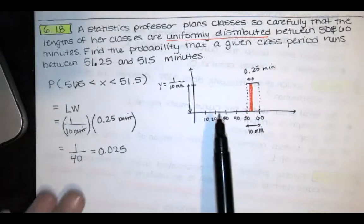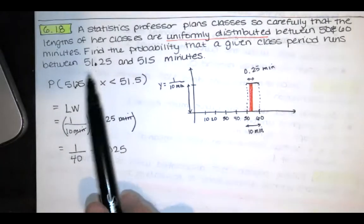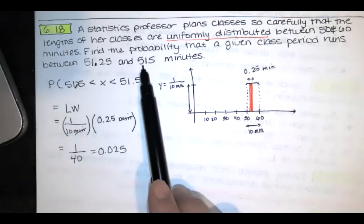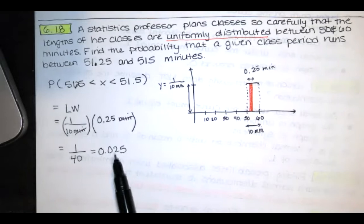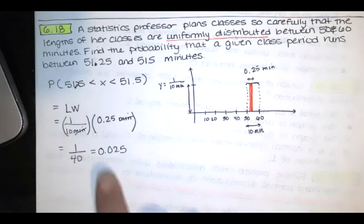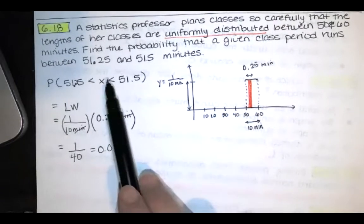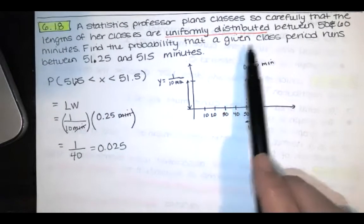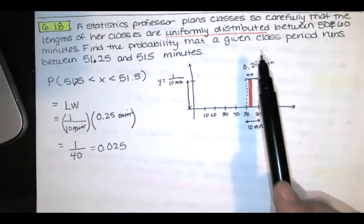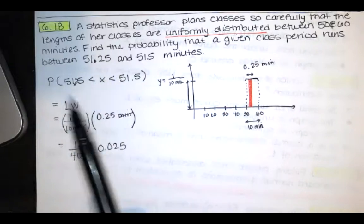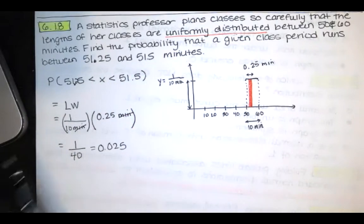So the probability that class ends between the 51.25 minute mark and the 51.5 minute mark is this 0.025. Now if we wanted to convert it to a percentage, we would just multiply by 100. So you move that decimal over twice. So there is a 2.5% chance that if we had a given class period, it would last between this 51.25 minutes and 51.5 minutes.